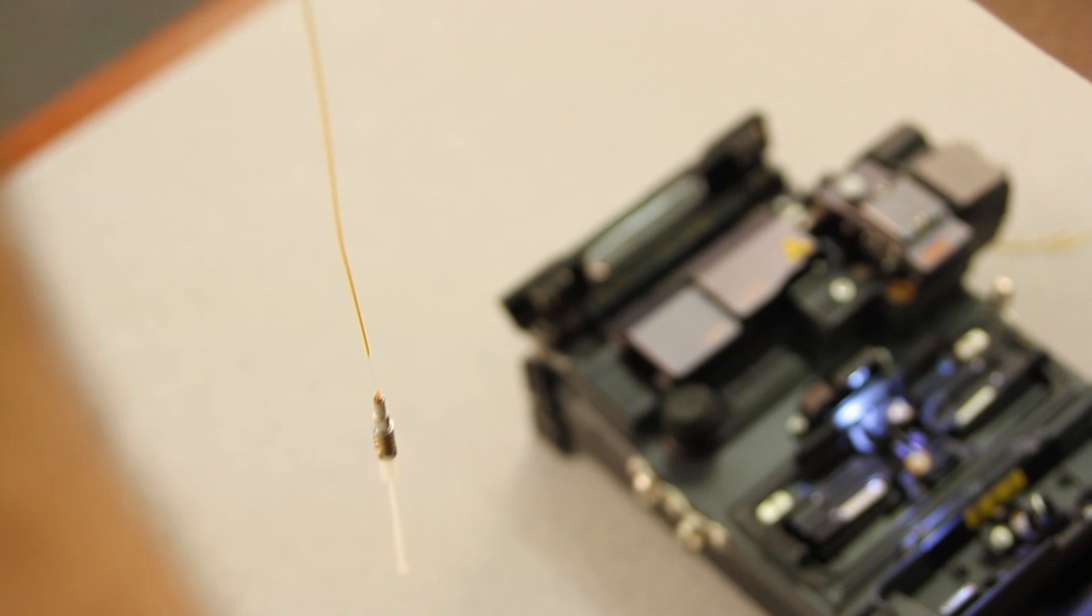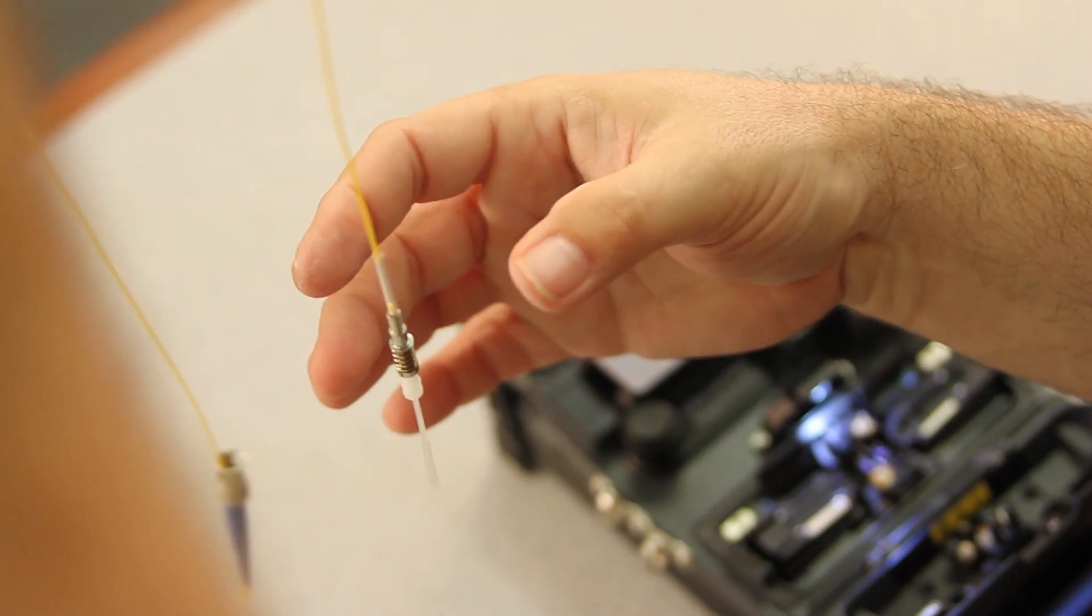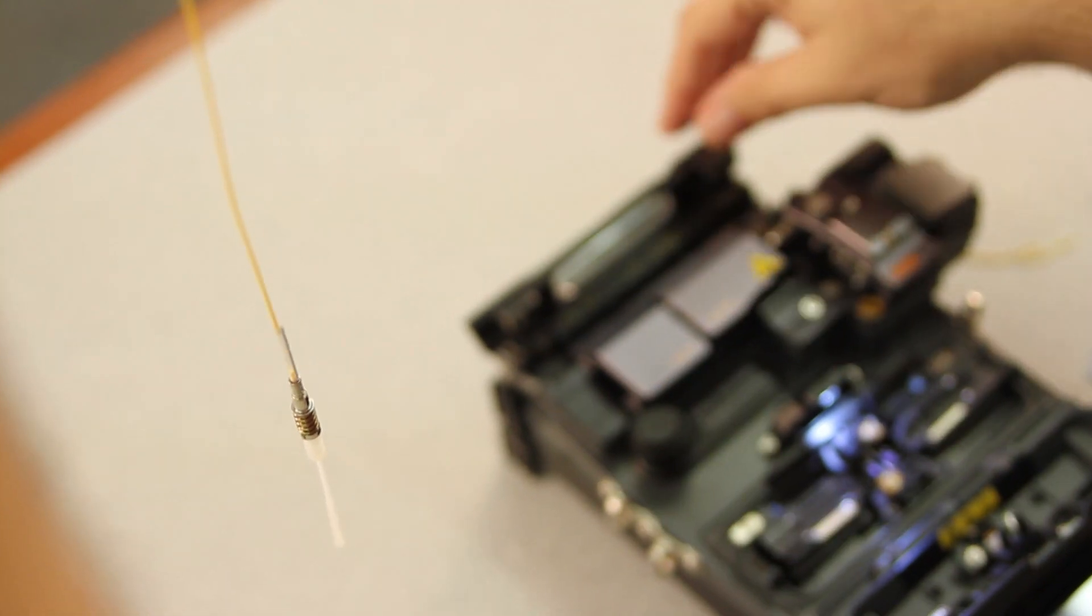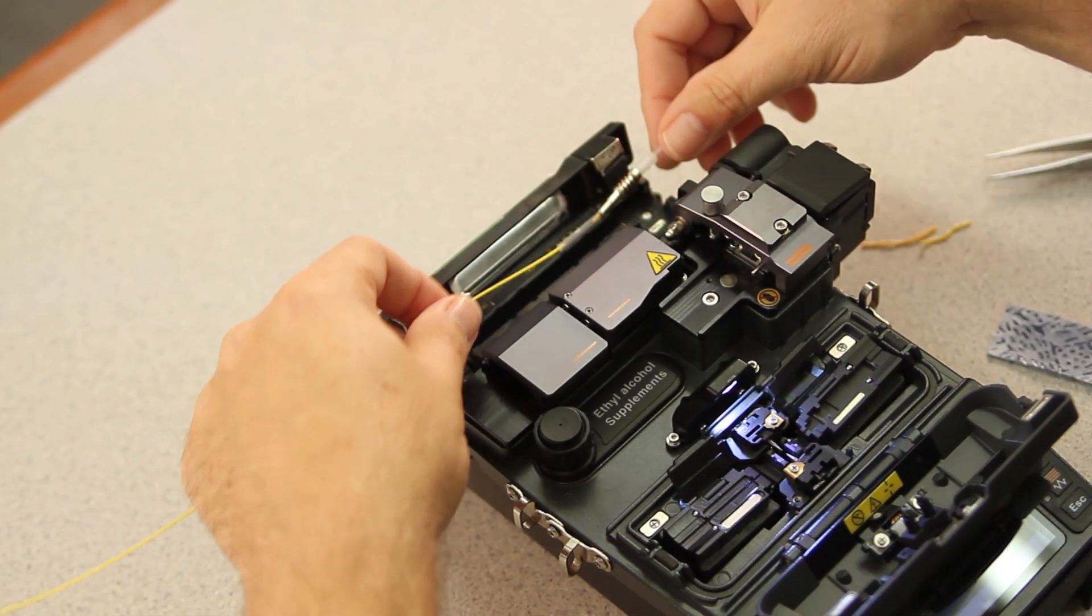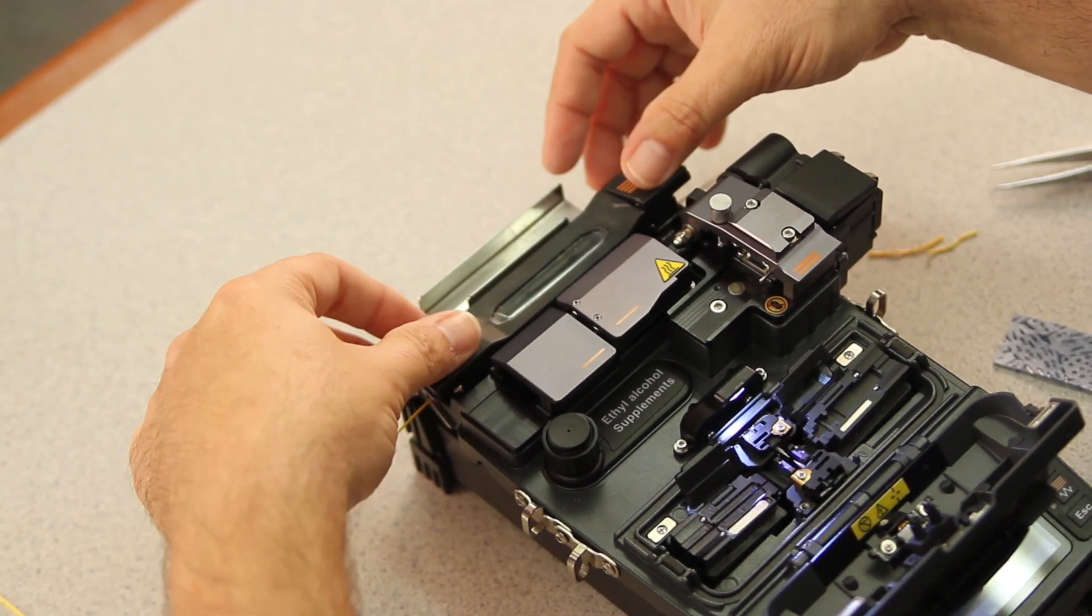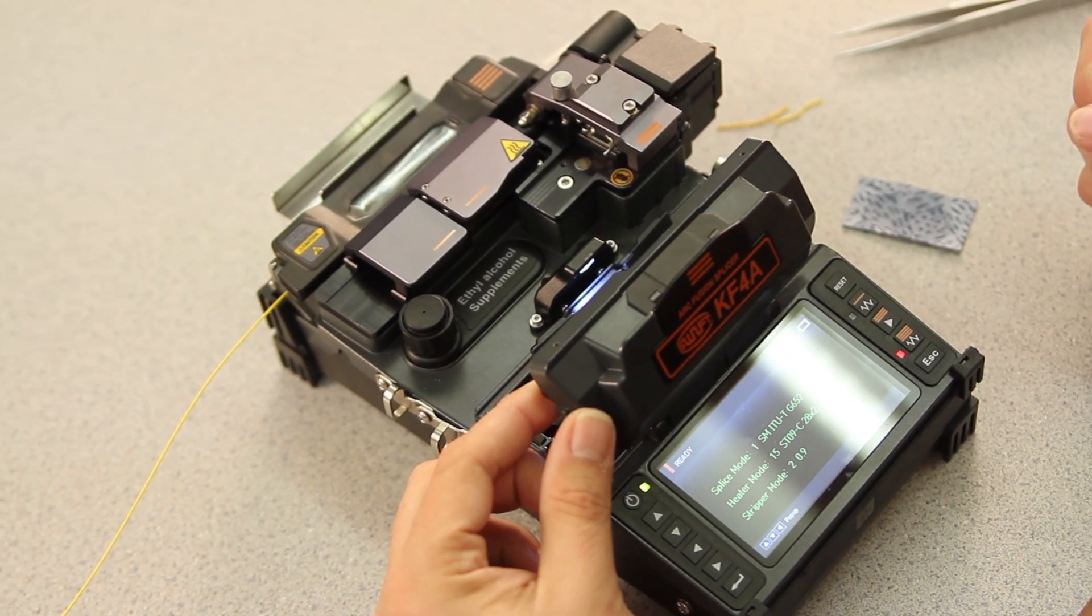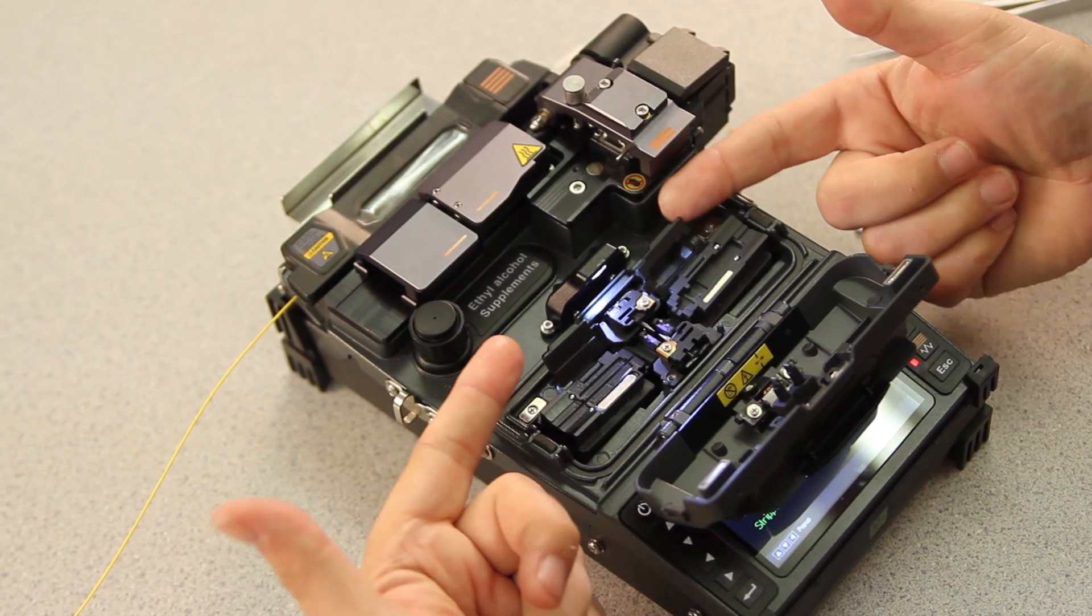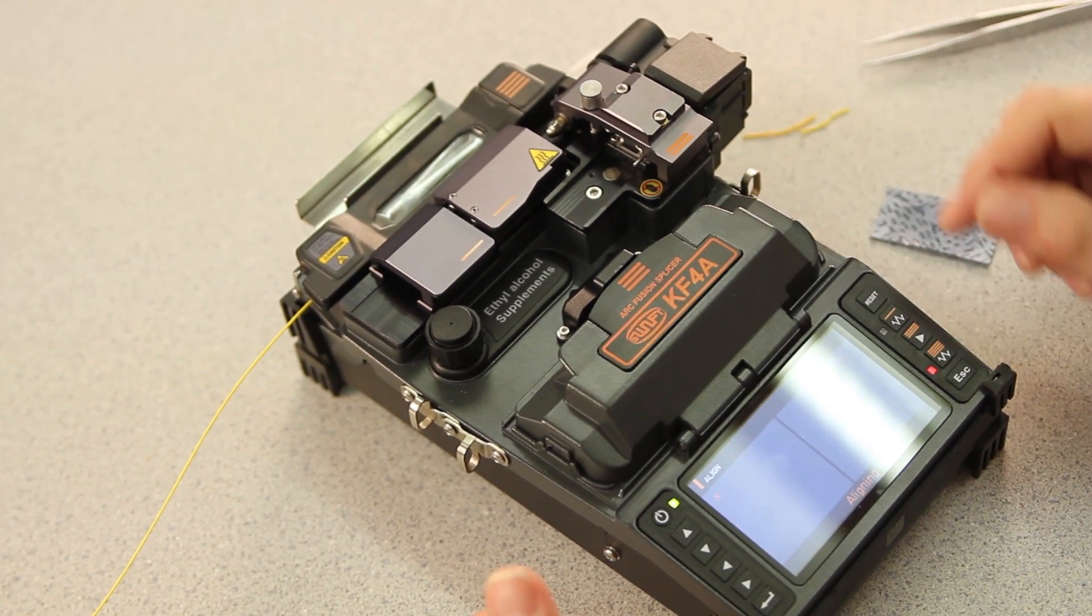Then, taking your heat shrink and bringing it all the way to the back of the connector. Place your connector within the oven, close both your doors. Then, turn your oven on. At this point, close both of your holder doors and close your wind cover.